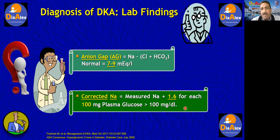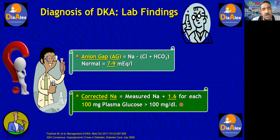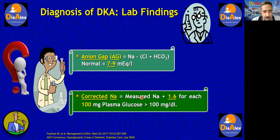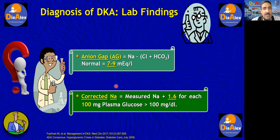For example, if the patient has a blood glucose of 300 mg/dL, that is 200 mg above the 100 mg baseline, so you multiply 1.6 by 2 to get 3.2, and add this 3.2 to the measured sodium reported by the lab. This is how to calculate corrected sodium, which we'll need in the treatment of diabetic ketoacidosis.